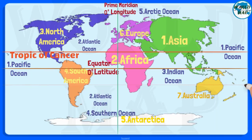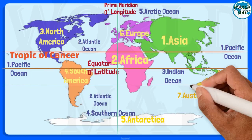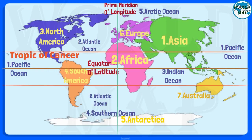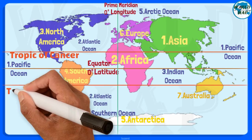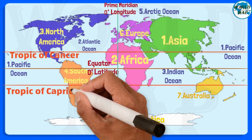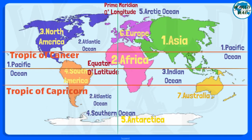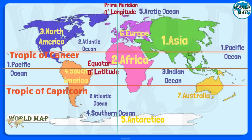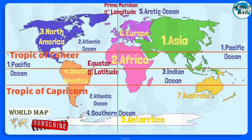Tropic of Capricorn. The Tropic of Capricorn is the circle of latitude that contains the sub-solar point at the December solstice. It is thus the southernmost latitude where the Sun can be seen directly overhead. It also reaches 90 degrees below the horizon at solar midnight on the June solstice.